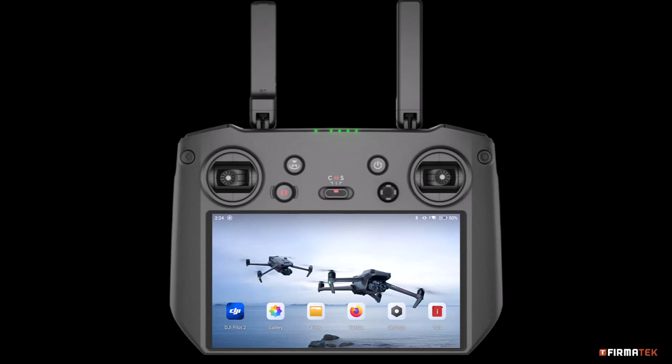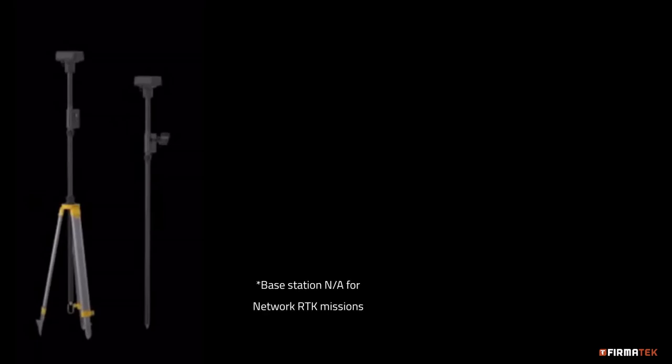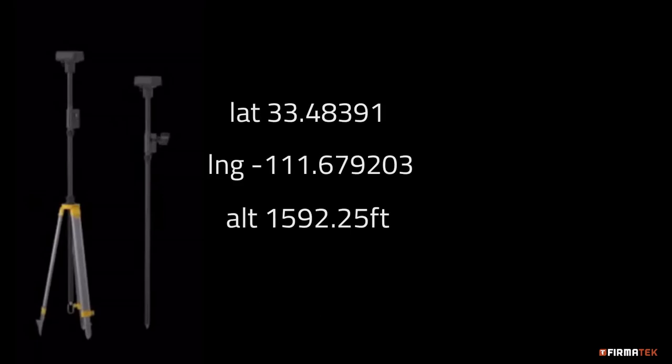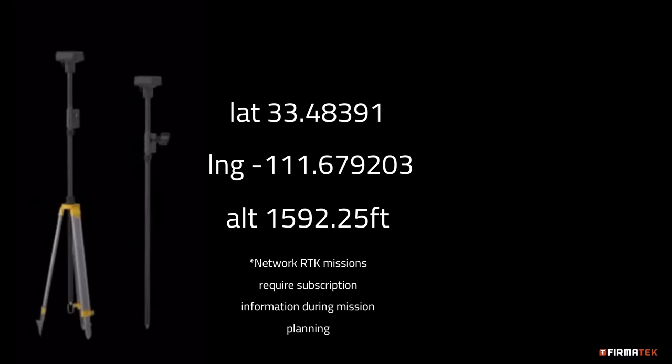Before we get started, let's get a few housekeeping items out of the way. This video covers the creation of an RTK mission that utilizes the DJI Mobile Base Station for real-time corrections. Prior to flying the mission, you will need to provide the coordinates of the control point the base station will be mounted over, so you'll want to have that information handy.